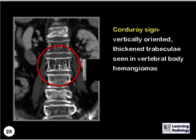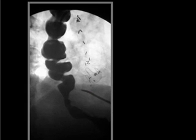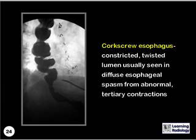What sign is demonstrated here? This is a corkscrew esophagus, which is the constricted, twisted lumen usually seen in diffuse esophageal spasm from abnormal tertiary contractions.